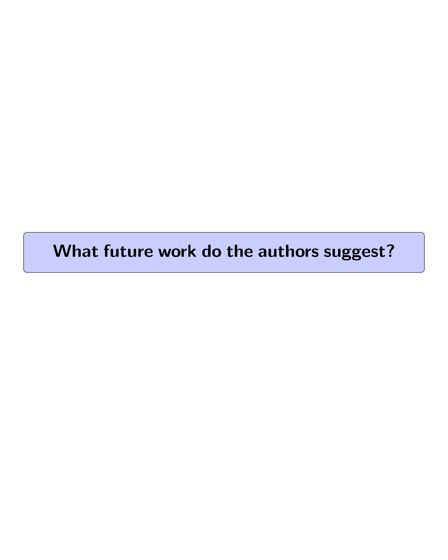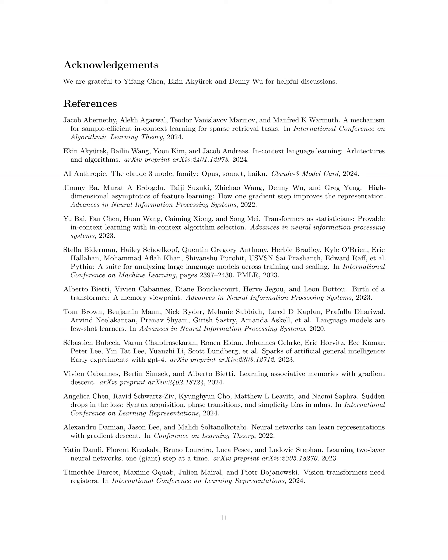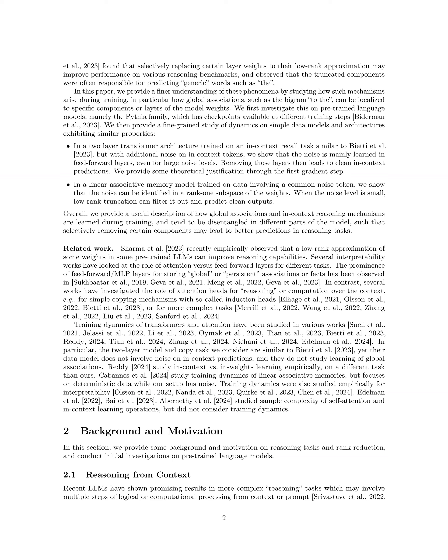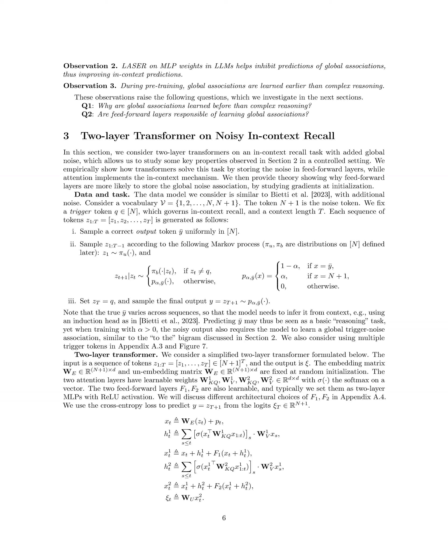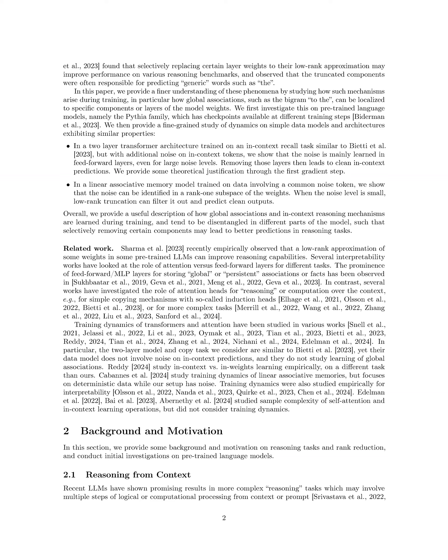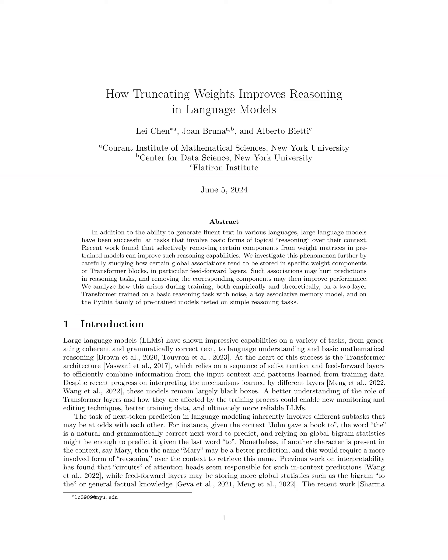What future work do the authors suggest? The authors propose investigating training dynamics and truncation behaviors in more complex data models to understand how LLMs differentiate between in-context and global associations in richer settings. They also raise the question of whether global associations are stored in attention layers rather than MLPs in certain architectures. Finally, they propose a more detailed study of SGD training dynamics encompassing feed-forward layers, value matrices, and key-query matrices throughout various training phases, to gain a deeper understanding of how LLMs learn to process global associations and in-context inputs.